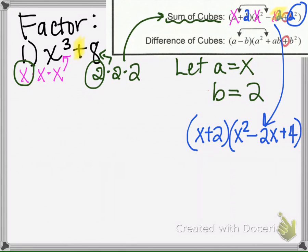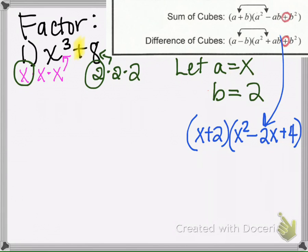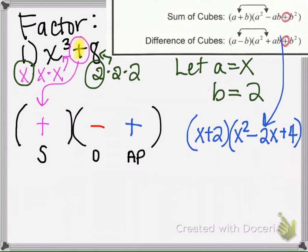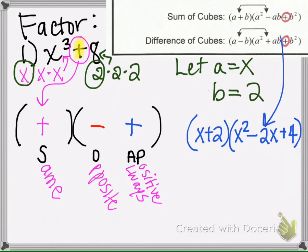I'm going to show you a different way using a mnemonic that will help us remember this formula, because on a test we're not going to have this formula to look at. To remember it, we're going to put two sets of parentheses and then write S, O, A, P — so SOAP. The S represents the symbol from the original expression, which we keep the same, so it stays a plus. The O represents opposite, and then AP represents always a plus sign. So SOAP helps us get the symbols that go in the parentheses.